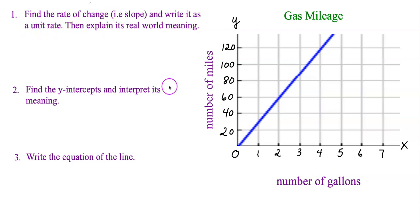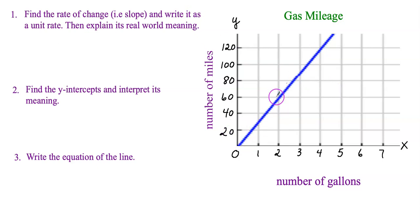Pause the video and see if you can find the slope of this line. Welcome back! Remember from my previous videos: to find the slope, you need to pick at least two points on the line, and they need to fall where the grid lines touch each other. Here's one point, and here's another nice one where the grid lines intersect.